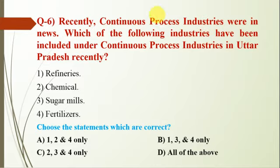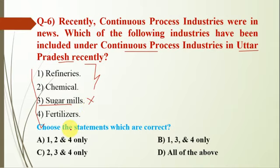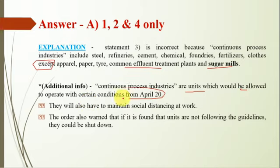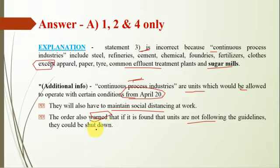Question number 6: which of the following industries have been included under continuous process industries in Uttar Pradesh recently? Options: refinery, chemical, sugar mill, and fertilizers. The incorrect one is sugar mill, so eliminating the third option, the answer will be A. Continuous process industries include steel, refining, cement, chemicals, foundries, fertilizers, glass, paper, tiles, and common effluent treatment plants. Sugar mills are also included — so the question here was about what was specifically listed in Uttar Pradesh guidelines. These industries were allowed to operate with certain conditions from April 20. The list may change, but as of now these are the designated continuous process industries in UP. They must maintain social distancing, and units not following guidelines could be shut down.